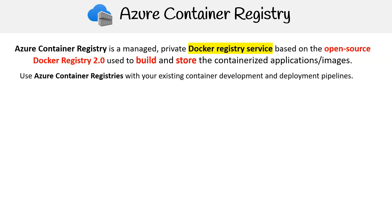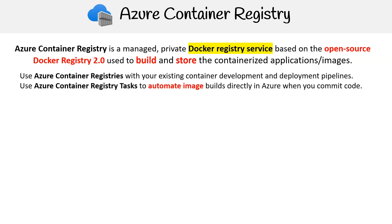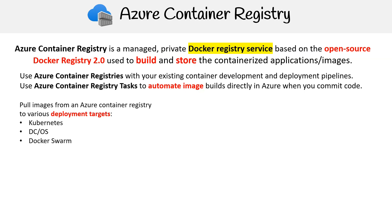Use Azure Container Registry with your existing container development and deployment pipelines. Use Azure Container Registry tasks to automate image builds directly in Azure when you commit code. You can seamlessly pull images from ACR for deployment to various orchestrators such as Kubernetes, DC/OS, and Docker Swarm.